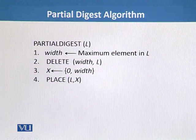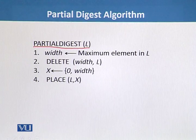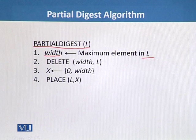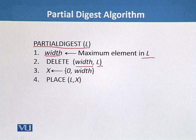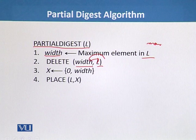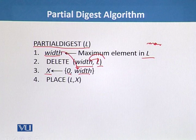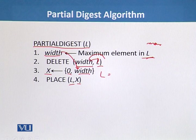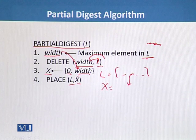In the partial digest algorithm, we denote the width as the maximum element in L. We delete the width from L, meaning the maximum element of L is removed. Then we denote the value of x as {0, width}. We then call the Place function with inputs L and x, where we have to calculate values of x from the subset L.